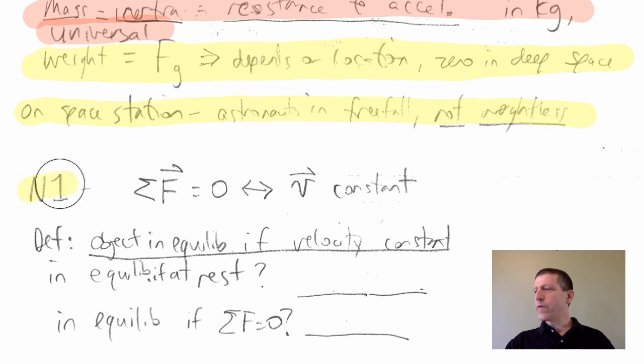Newton's first law, which I abbreviate as N1, simply states that if the net force on an object is zero, then the velocity is constant. There's nothing more than that.